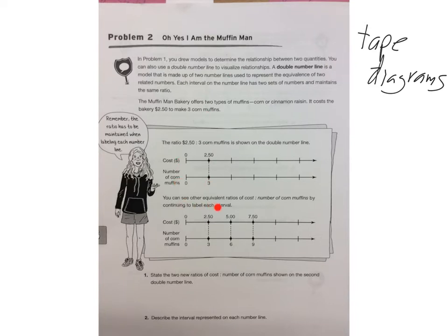You can see other equivalent ratios of cost and number of corn muffins by continuing to label each interval. So we double it — times two — and get $5.00. Add another $2.50 and you get $7.50. On the muffins side, times two gives us six, and then we add three more to get nine. So $7.50 to nine corn muffins.